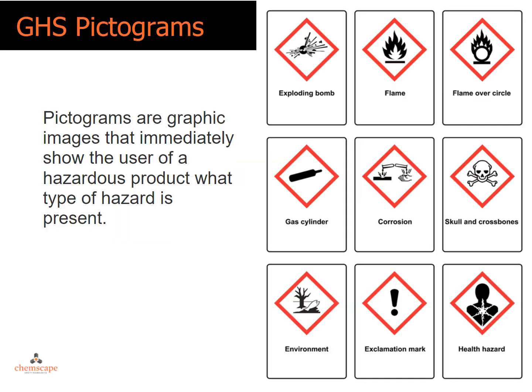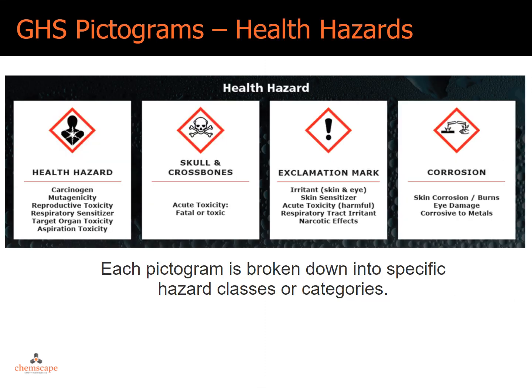GHS has nine pictograms — graphic images that immediately show the user of a hazardous product what type of hazard is present. Here are the pictograms that represent health hazards. Each pictogram is broken down into specific hazard classes or categories.